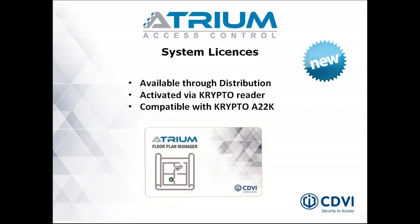Licenses will be available through distribution, so you get them through your favorite distributor. What you'll be purchasing is an actual card that has the license encoded on it. You'll read that card on the system where you want to apply it. Once the card is read and activated, the license is tied to that particular system — there is a read/write process that prevents multiple installs of the same license on different installations. It is one license per system installation, activated through the crypto reader. You can also enter the information manually, which is a long and tedious process, but it is possible. This is with the crypto platform with the A22K and the K1 readers.